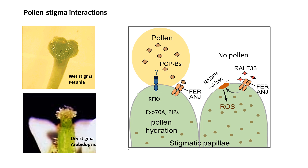When pollen lands on the stigma, the pollen coat proteins or PCPBs competitively bind to these receptor-like kinases and replace RALFs, thus shutting down ROS production. In wet stigmas, the water present in the stigmatic exudates carries out passive hydration of the pollen. However, Arabidopsis has a dry stigma with long papillae cells covered with a continuous layer of cuticle. In this case, S-locus glycoproteins on the stigmatic surface interact with the pollen to facilitate adhesion, but hydration is carried out by another signaling pathway.